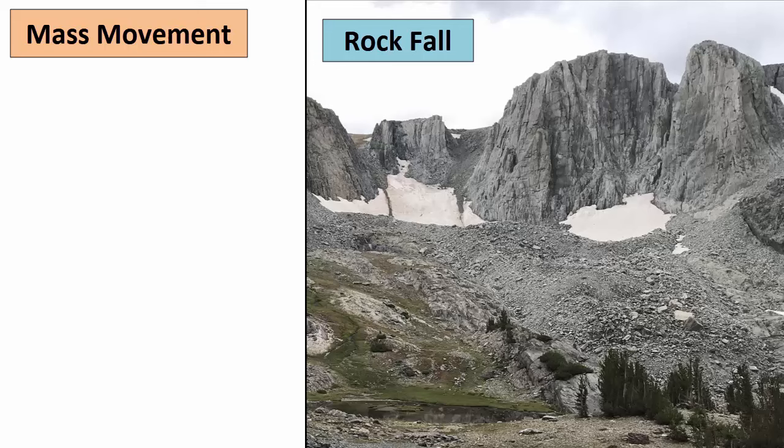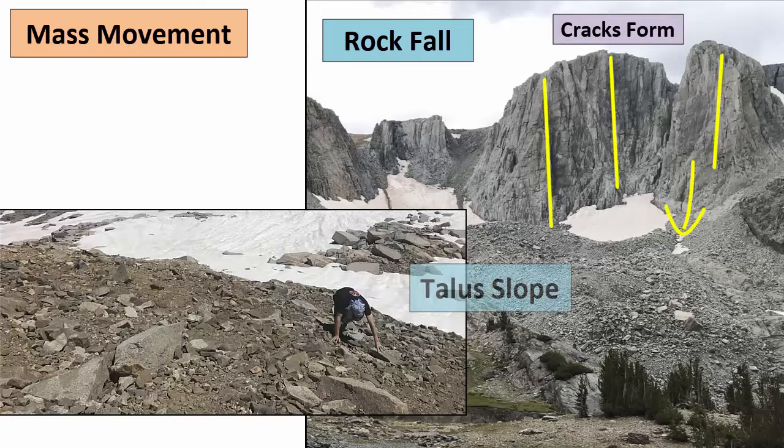The fastest type of mass movement happens during a rock fall, which happens when cracks form on rock cliffs and eventually break off chunks of rock, which fall and collect at the base of the cliff in a pile known as a talus slope.